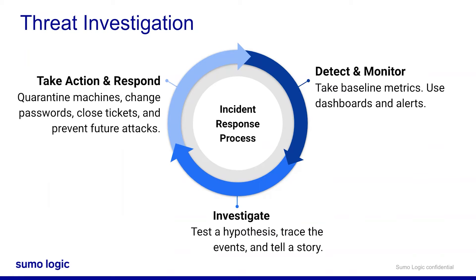As you dig deeper, you may revise your initial hypothesis and find more clues about why or how the attack happened. As you investigate and trace the events, try to answer as many WH questions as you can: who is behind the event? What assets did it affect? Where did it occur? When did it occur? Why did it occur? And how did it occur? Finally, you can take action to resolve the issue — for example, working with IT to isolate infected laptops, or with HR to enforce mandatory anti-phishing training.